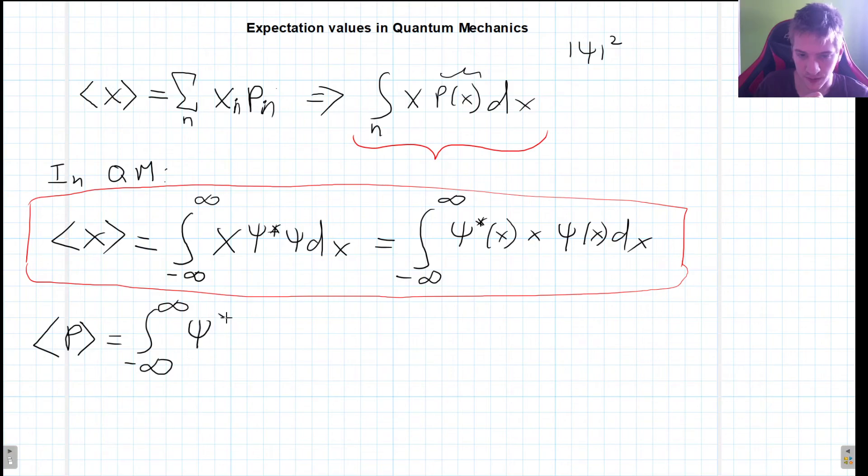it's going to be, this is psi conjugate, and the momentum operator will go here in the middle of these psi wave functions. So the important thing to notice is that the operator will always go in the in between of these two psi wave functions.